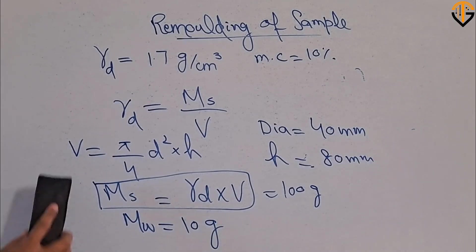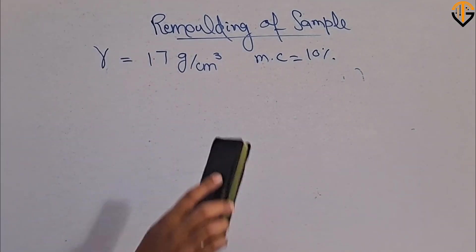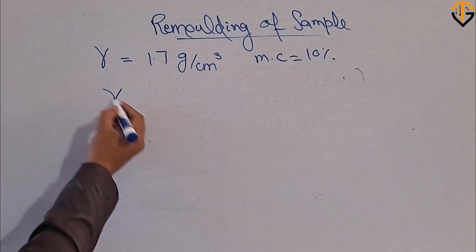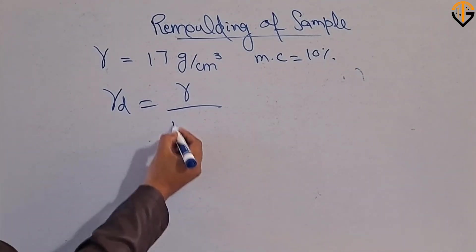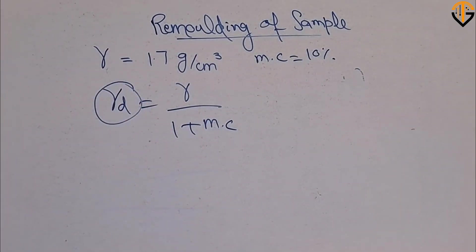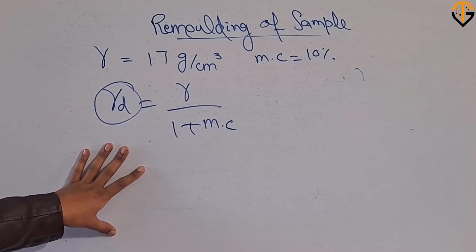What if you have the bulk density instead? First, you find the dry unit weight (gamma dry) using the formula: gamma dry equals gamma bulk divided by (1 plus moisture content). Then, with the dry density and moisture content, you remold the soil sample according to the mold dimensions. This is how you remold the soil sample in the laboratory for performing geotechnical tests. I hope you like this video — don't forget to subscribe and share.